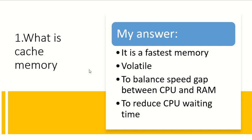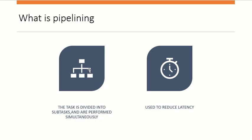The next question was: what is cache memory? My answer was that it is the fastest memory, it is volatile memory, and it is used to balance the speed gap between the CPU and RAM. It is also used to reduce the CPU waiting time.